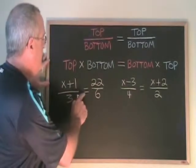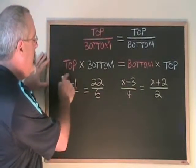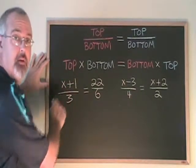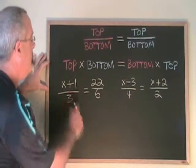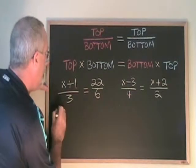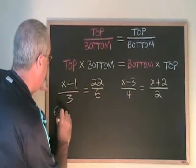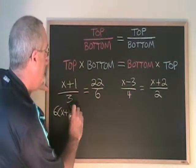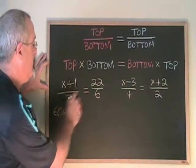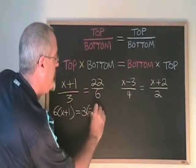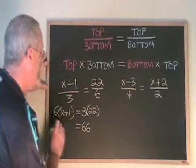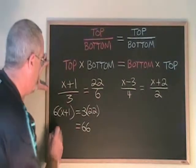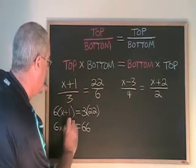In this proportion, we actually have an algebraic expression in one of the positions, and we can still solve this. Top times bottom means (x+1) times 6. I'll write it as 6(x+1) equals, bottom times top is 3 times 22. 3 times 22 is 66. And 6 times the bracket (x+1) is 6x plus 6.